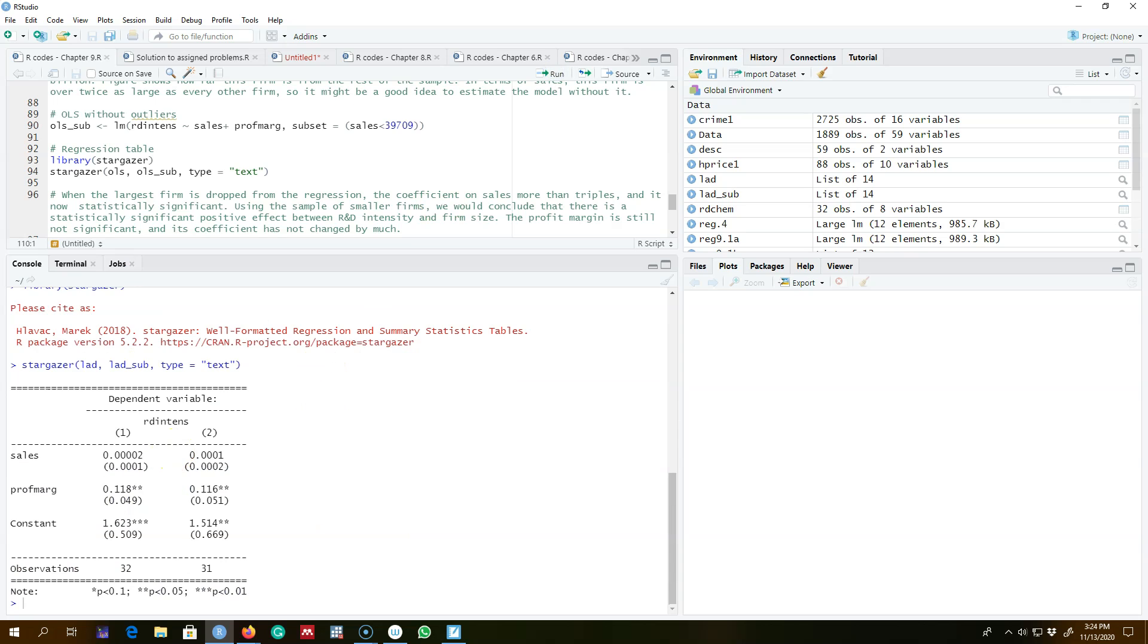As we can see, the coefficient values for sales variable are not much different and the statistical significance is also not very different across these two models, one with the outlier and the other without the outlier.